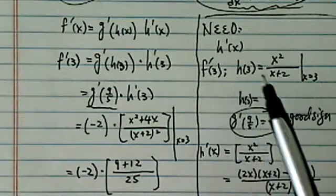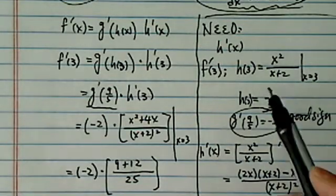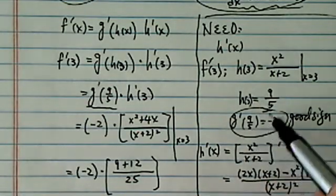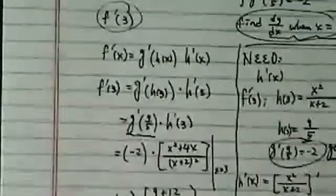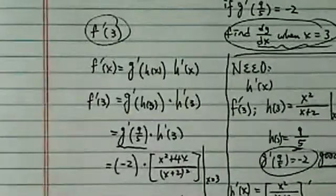I need an h prime of x, and then I went ahead and figured out what that is because I need an h of 3, and it turned out it's 9/5. So this is a good sign that I know I'm on the right track. Once I have that, then I started over here. I'm going to use the chain rule here.